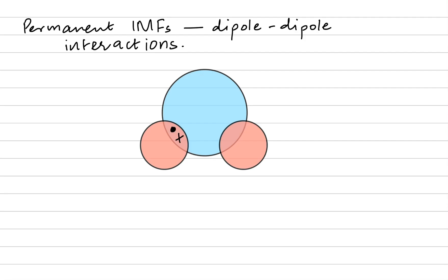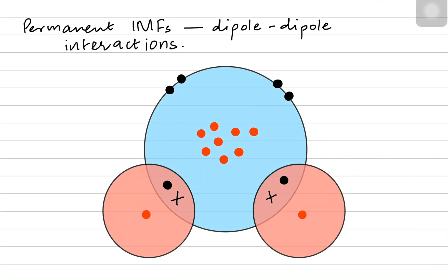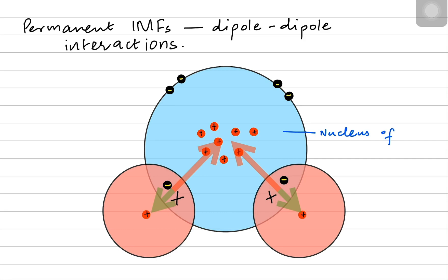Imagine a water molecule which has an oxygen atom and two bond pairs, one with each hydrogen atom. I have even represented the lone pairs. Oxygen has eight protons inside the nucleus while hydrogen has one proton each. We magnify the diagram to appreciate how protons are the positively charged subatomic particles while electrons have negative charge on them.